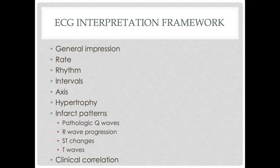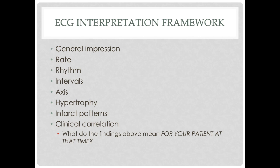Finally, infarct. Infarct patterns can be divided into another mnemonic: Q waves, R wave progression, ST segments, and T waves. I'm looking for pathologic Q waves, R wave progression across the V leads, ST segment elevation, ST segment depression, and T waves. These usually jump out and catch your eye, although some infarct patterns can be subtle. Once I have rate, rhythm, intervals, axis, hypertrophy, and infarct, I correlate that to the patient. The exact same squiggles on an EKG can mean something completely different from a 70-year-old woman with chest pain versus a 17-year-old male having a pre-football physical. Correlate it to the patient's presentation, their complaint, and the reason for taking the EKG.